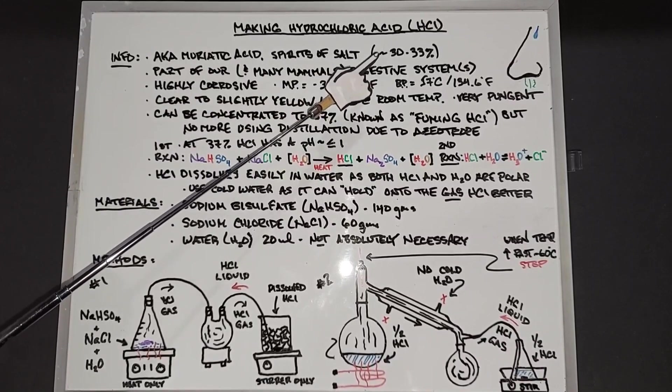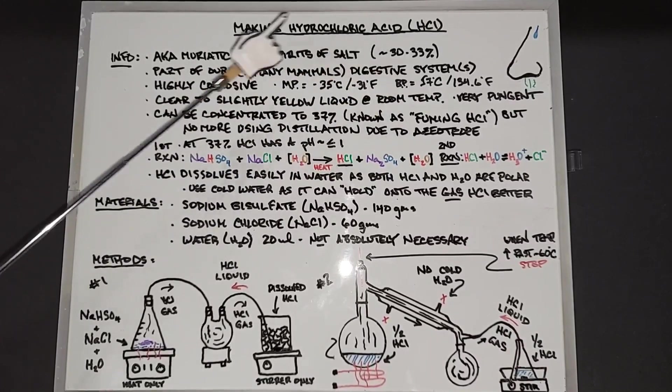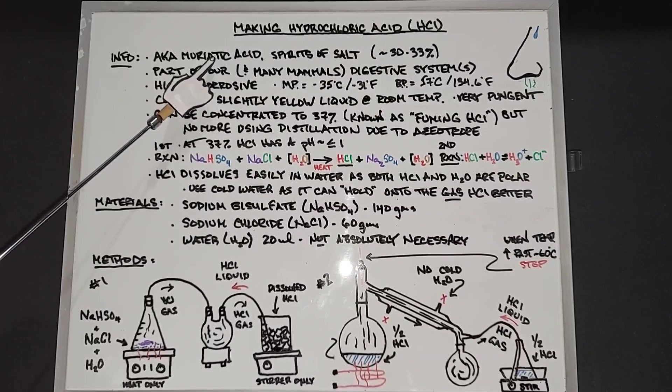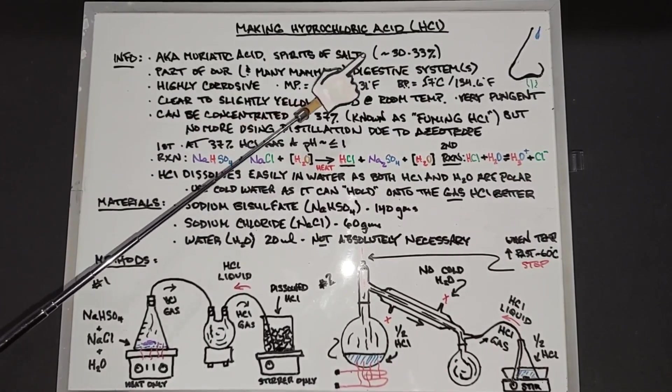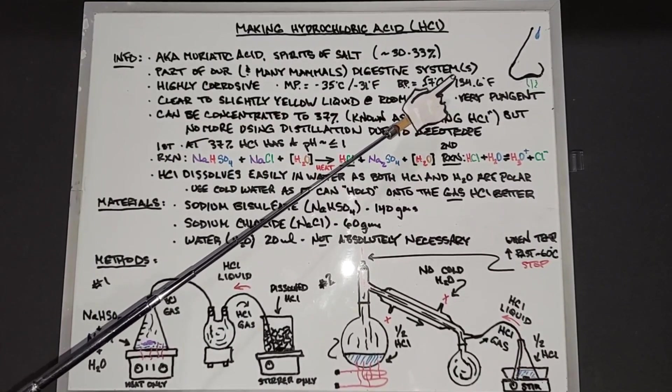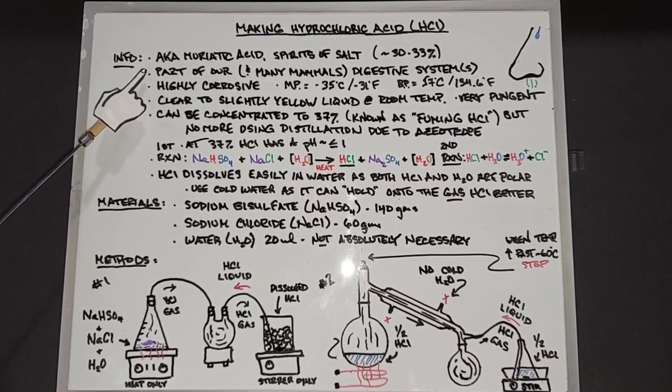I've also seen it written as hydrochlorous acid. It comes in a range of 30 to 33 percent if you get muriatic acid especially at a hardware store. Hydrochloric acid is part of our and many mammals digestive systems, of course in the stomach.